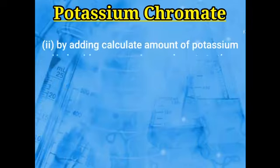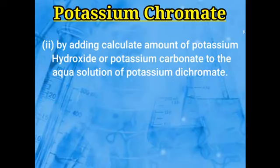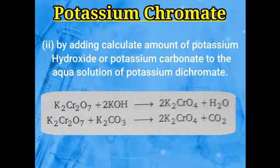The second method involves reacting potassium dichromate with potassium hydroxide or potassium carbonate. Potassium dichromate (K₂Cr₂O₇) is an orange colored compound. K₂Cr₂O₇ reacts with 2 molecules of KOH to give potassium chromate and H₂O. Alternatively, K₂Cr₂O₇ reacts with K₂CO₃ to give potassium chromate and CO₂.